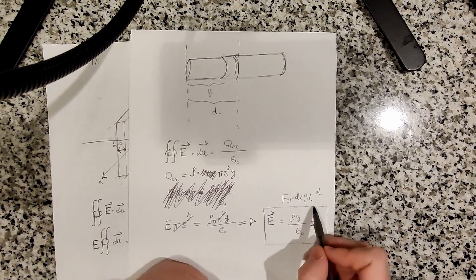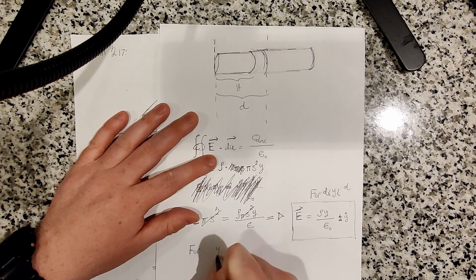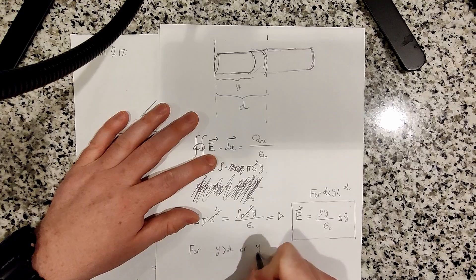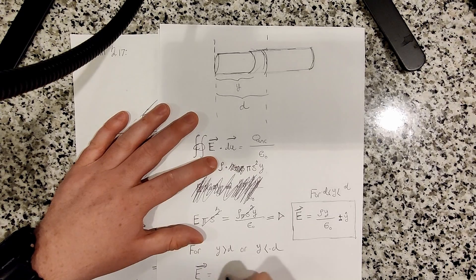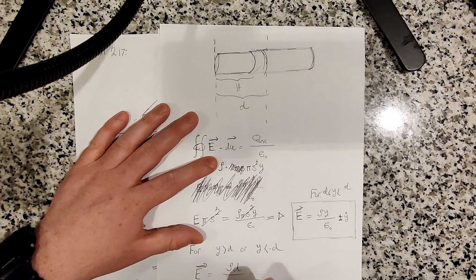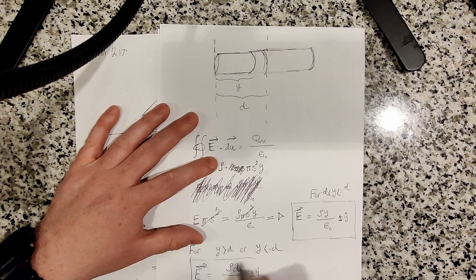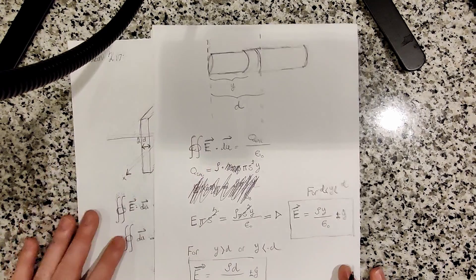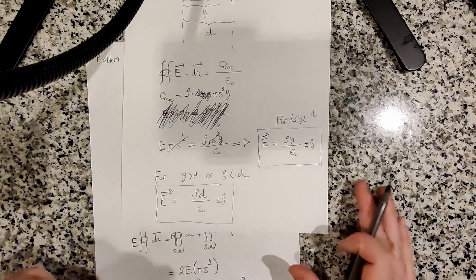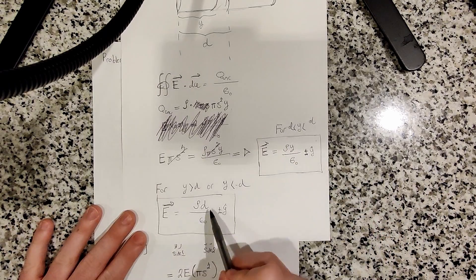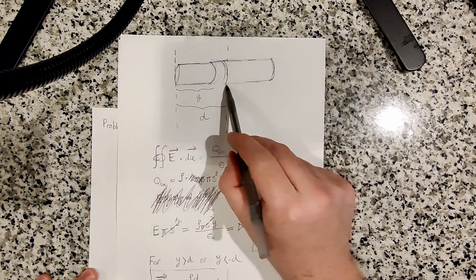So instead of having y here, we would just have d. This equation is for y between d and minus d. As long as you're between d and minus d, then this equation applies. But as soon as you get outside, for y greater than d or y less than minus d, the equation for the electric field is a constant. So instead of y, you just have d, plus or minus y hat, depending on which direction you're going. That's basically the argument. I hope that makes sense as to why the y gets replaced with d, simply because all the charge enclosed in our Gaussian surface now takes up the volume of length d.